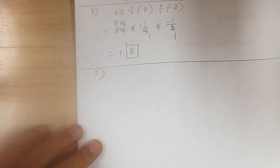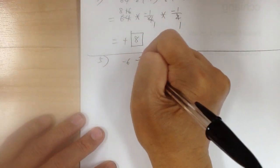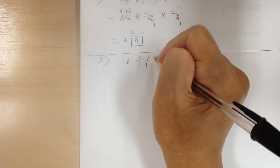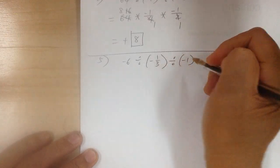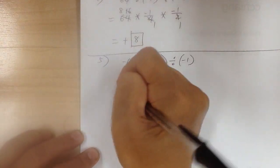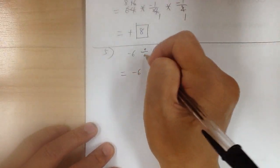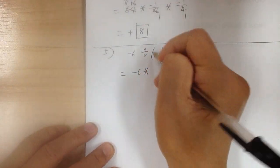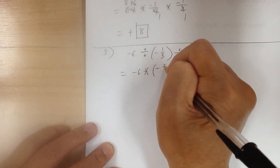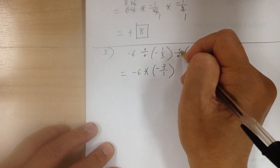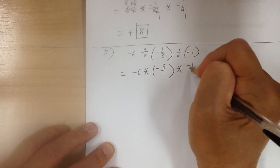Let's go to number 5. You have negative 6 divided by negative 1. First I'm going to convert everything into multiplication, so negative 6 — divide means multiply — and you have to flip this over, so it becomes negative 3 over 1. This is division, so multiplication; when you flip it over, it's still going to be negative 1 over 1.